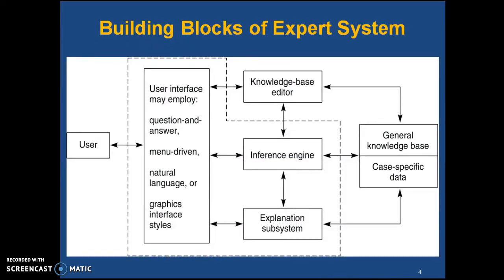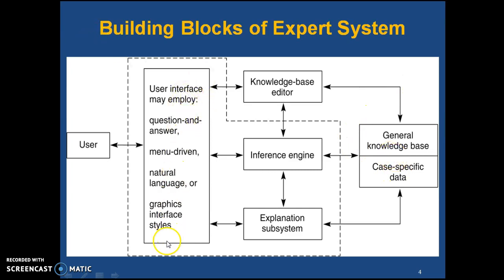Now let us see the block diagram of an expert system. The main components are: the knowledge base, where domain knowledge is encoded and maintained; the inference engine, which processes the user-inputted query — it behaves like the CPU of a computer system; the explanation system, which explains the decisions the system makes; a knowledge editor for editing purposes; and the user interface, which supports natural language processing.